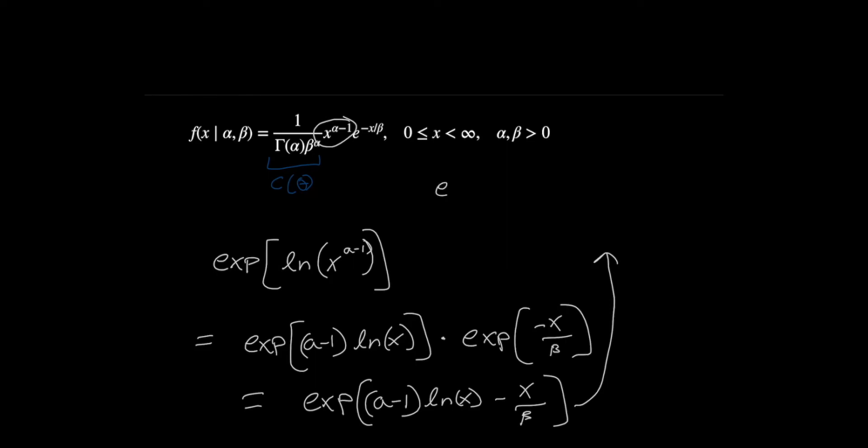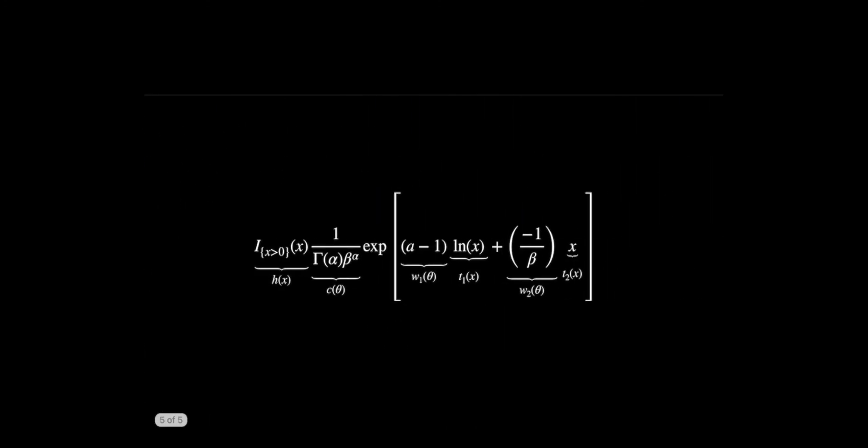Actually, if we just switch this around a little bit, we can get into the form that we want. So if you look, we can write this: the first part stays the same, and we're just going to put a plus here plus minus 1 over beta times X. These are the same thing. The reason we're doing this is so now we have a parameter term times an X term plus a parameter term times an X term.